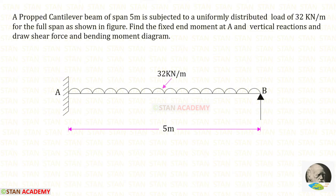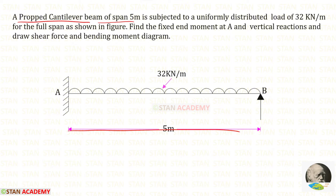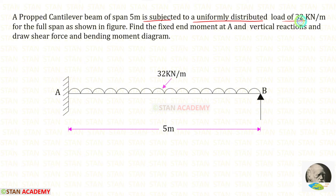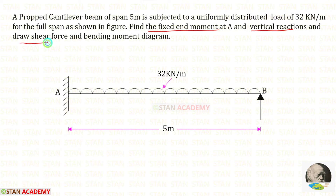Hello everyone. Today we are going to analyze this beam using the strain energy method. A propped cantilever beam of span 5 meters is given. The beam is subjected to a uniformly distributed load of 32 kilonewton per meter for the full span. We have to find the fixed end moment at A, the vertical reactions, and then draw the shear force and bending moment diagrams.